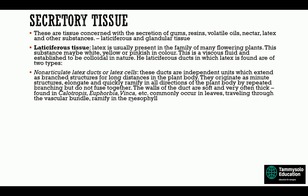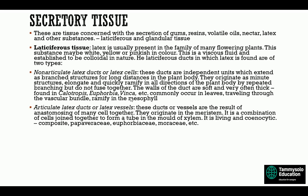Non-articulated latex ducts or latex cells: these ducts are independent units which extend as branched structures for long distances in the plant body. They originate as minute structures, elongate, and quickly ramify in all directions by repeated branching but do not fuse together. The walls of the ducts are soft and often thick. Found in Calotropis, Euphorbiaceae, Vinca, etc. They commonly occur in leaves, traveling through the vascular bundle and ramified in the mesophyll. Articulated latex ducts or latex vessels: these result from the anastomosing of many cells together — meaning the fusing of many cells to form a tube. They originate in the meristem. They are living and coenocytic, found in Papaveraceae, Euphorbiaceae, Moraceae, etc.